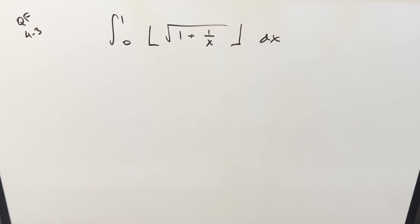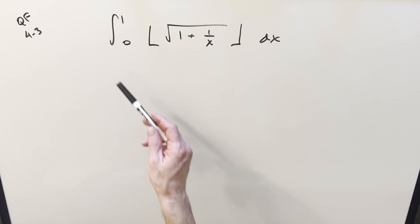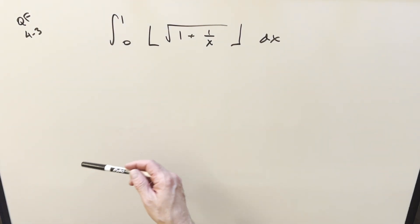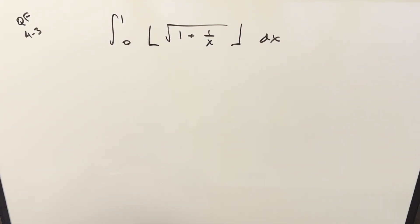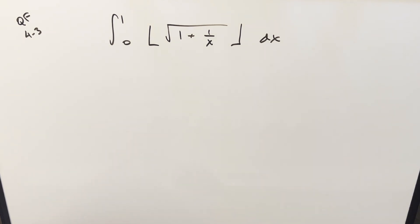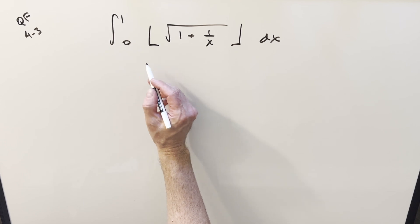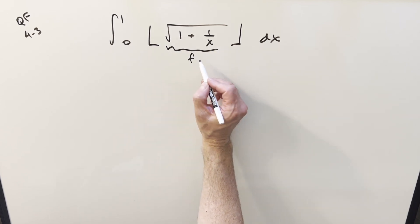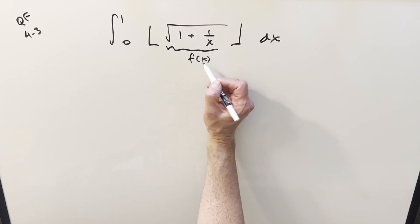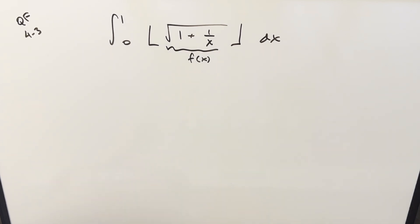To get started, for the floor function, what I want to do is break up the bounds where they're separated by an integer, but we already have that — we're just going from 0 to 1, so I need to look at this more closely. Let's call this thing f of x, just what's inside the floor function.